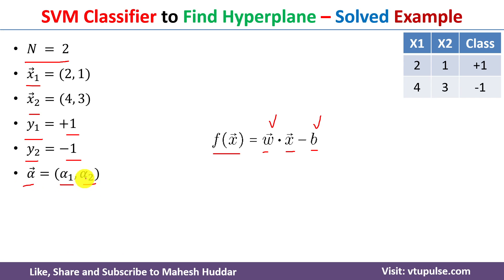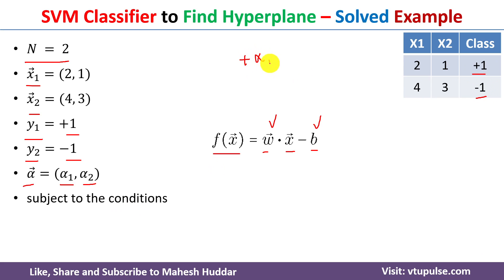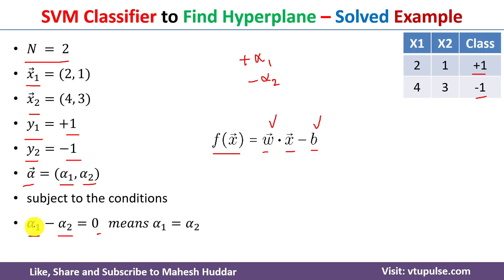While calculating alpha 1 and alpha 2, we need to consider these conditions. The first example belongs to plus 1, so it will be considered as plus alpha 1; the second belongs to minus 1, so it will be minus alpha 2. We equate these to 0: alpha 1 minus alpha 2 equals 0, giving alpha 1 equals alpha 2. Additionally, all variables must be greater than 0.